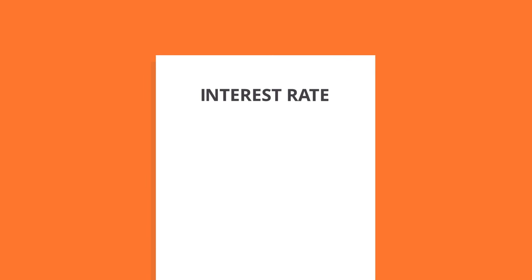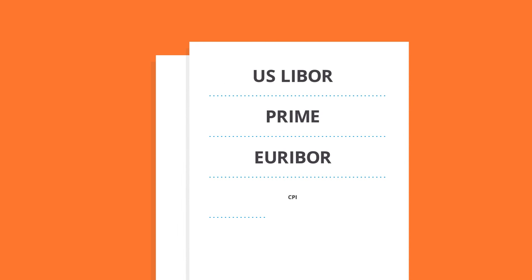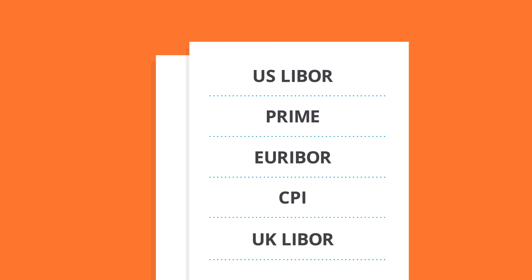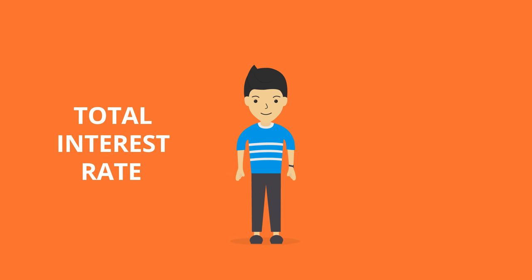So how can you break this down? First, you need to look at your interest rate, which could be a fixed rate or can consist of a variable base rate plus a margin. For example, LIBOR plus 7%. There are a few base rates that lenders use, so be sure to compare the correct rates. Once you've worked out your total interest rate, take a look at your fees next.